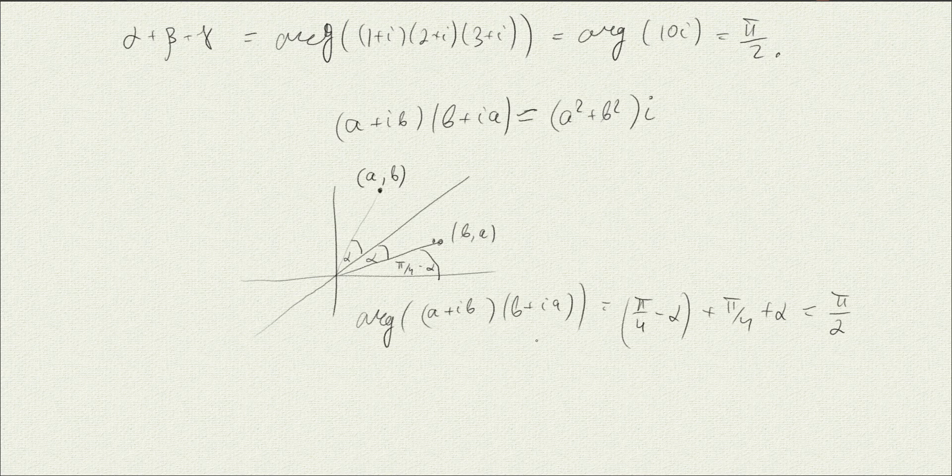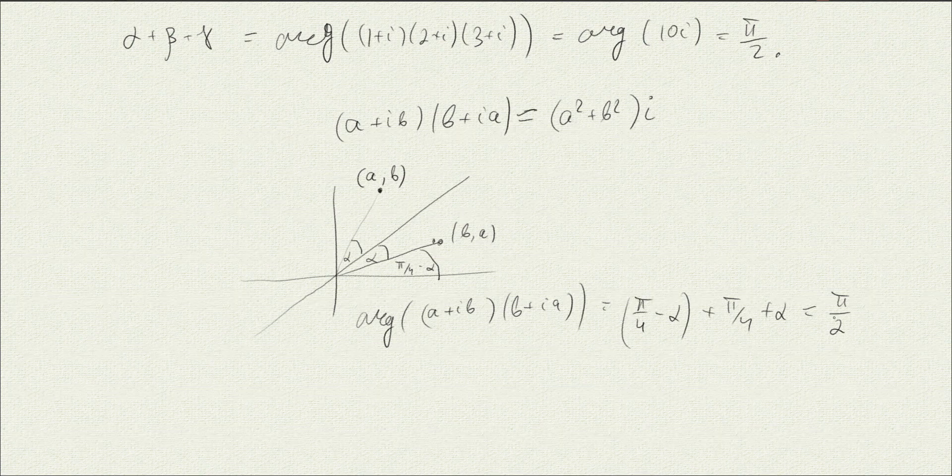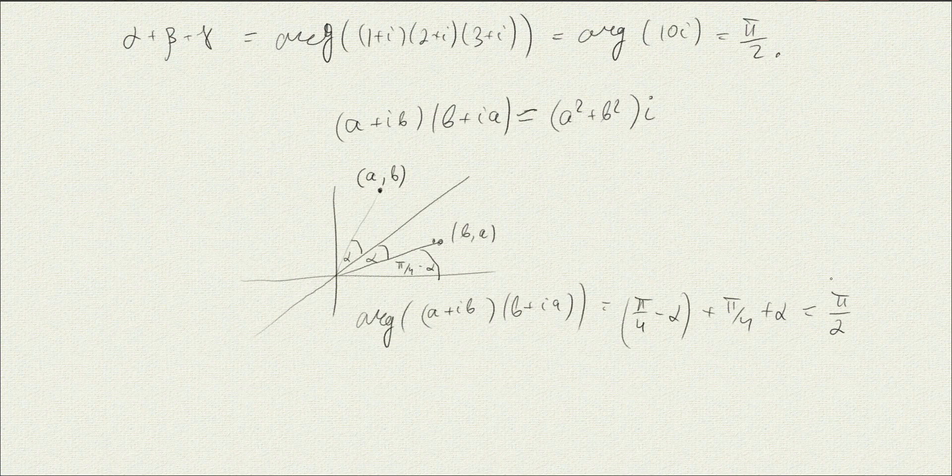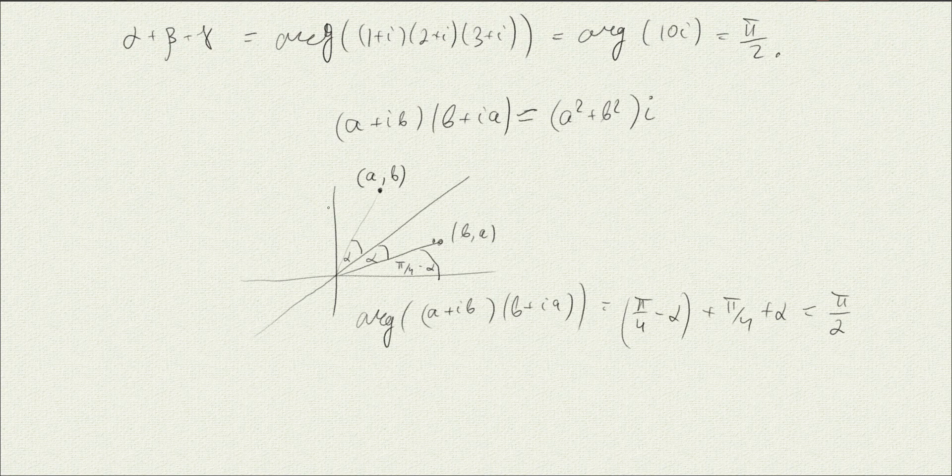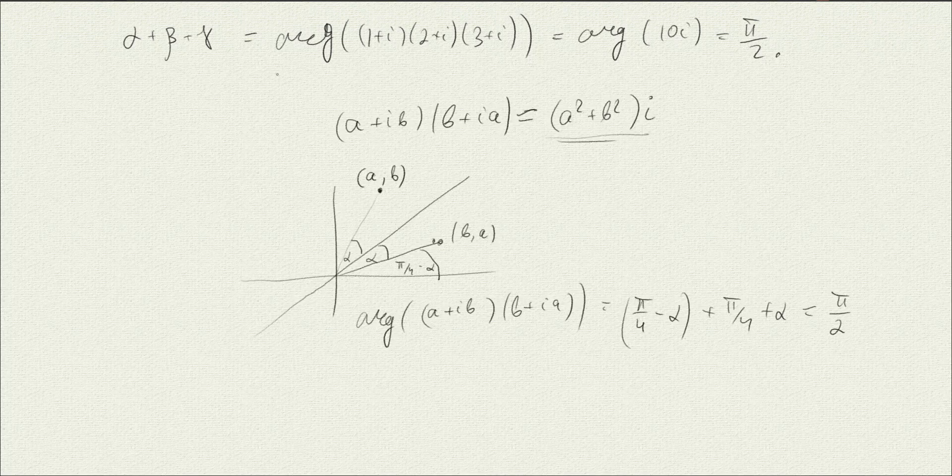So the argument of this number is going to be pi half, or 90 degrees if you want, and it means that this number is going to be purely imaginary as we saw here, so it's a nice geometrical explanation.